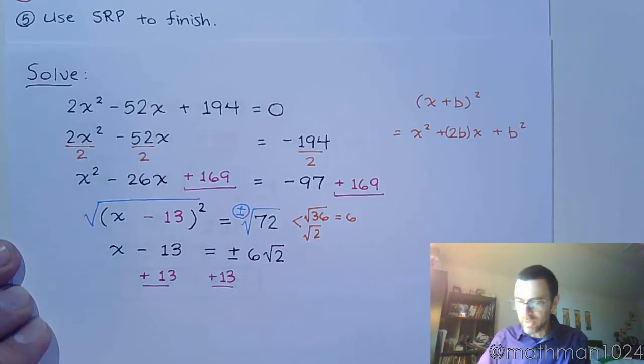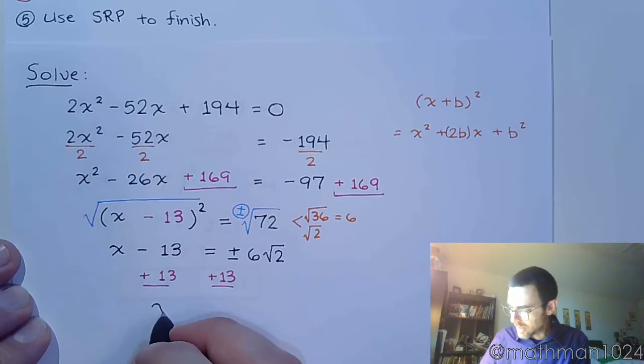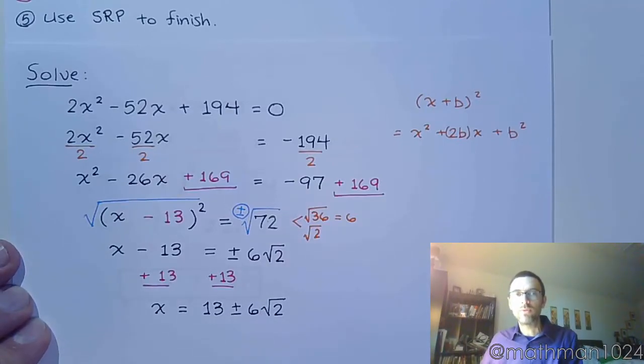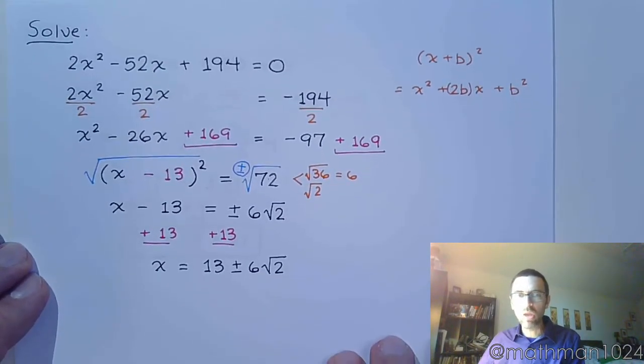So, plus 13, plus 13. And x is equal to 13 plus or minus 6 times the square root of 2.